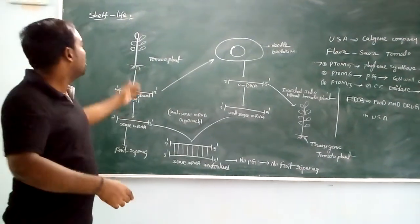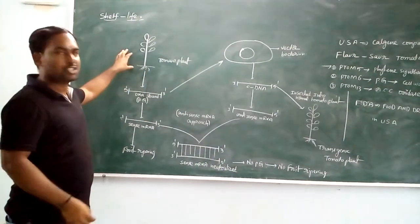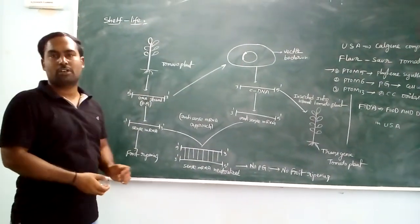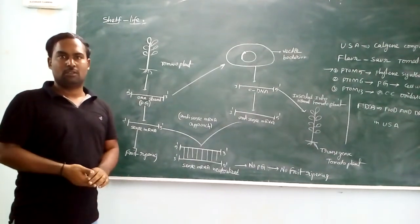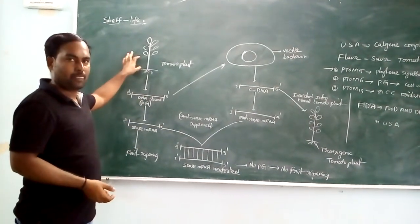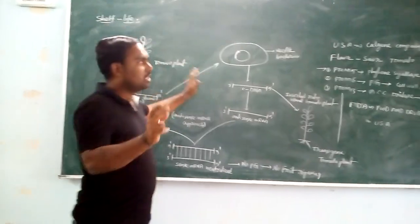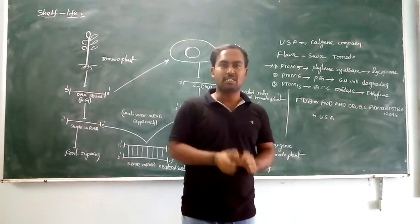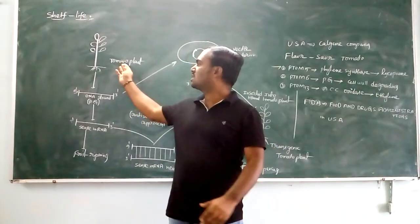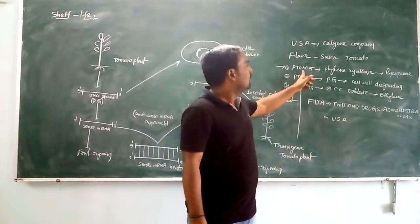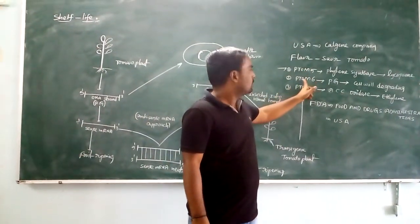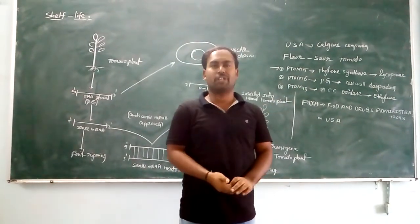What steps are involved in this process? First we select the normal tomato plants. There are three desired genes isolated from this tomato plant: Ptom5, second one Ptom6, third one Ptom13.